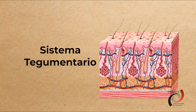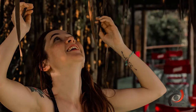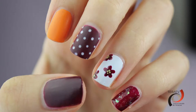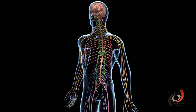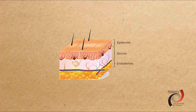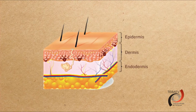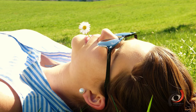Uno de estos sistemas, por ejemplo, es el sistema tegumentario, que está compuesto por la piel, el cabello, las uñas, así como por glándulas y nervios. La función principal del sistema tegumentario es actuar como una barrera para proteger el cuerpo del mundo exterior.